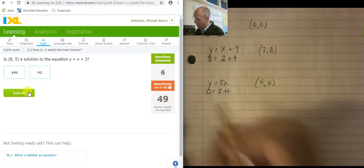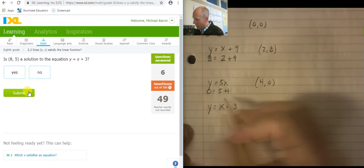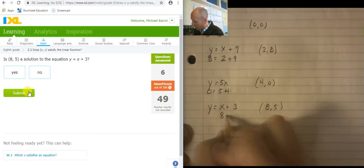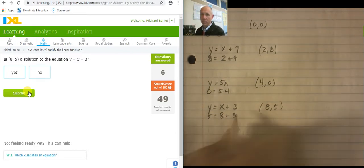Y equals x plus 3. And I'm plugging in 8 comma 5. 8 is the x. So that's 8 plus 3. Y is the 5. 5 equals 8 plus 3. No.